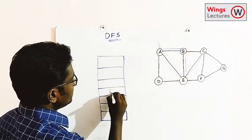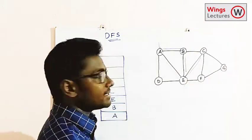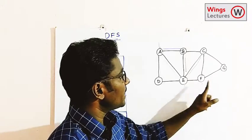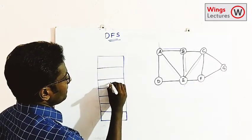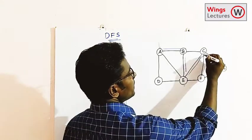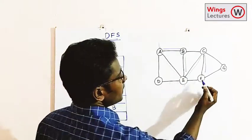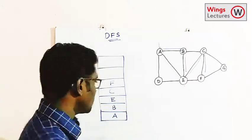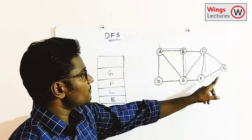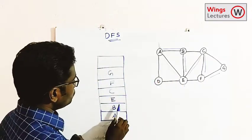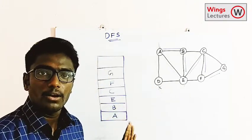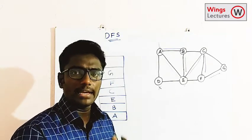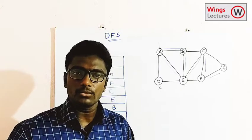From E we choose C and push it. From C the adjacent vertices are G, F, E, and B. E and B are already visited, so we have F or G. I choose F, so push F. From F the adjacent vertices are E, C, and G — C and E are visited, so we can visit G. Push G.